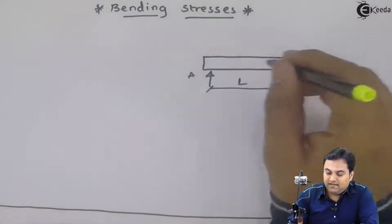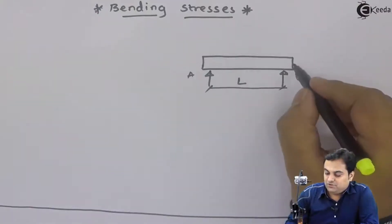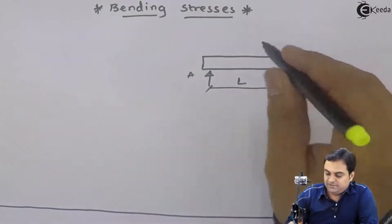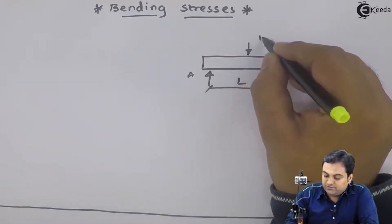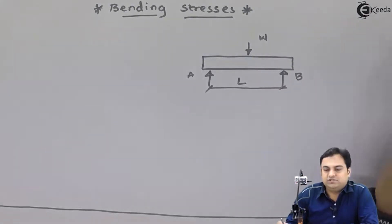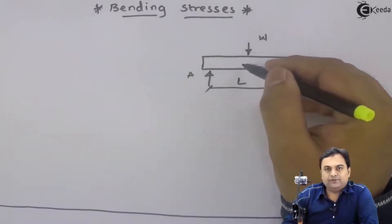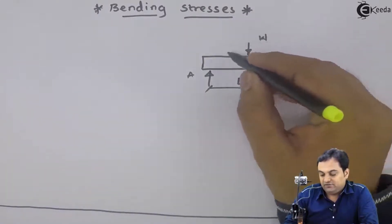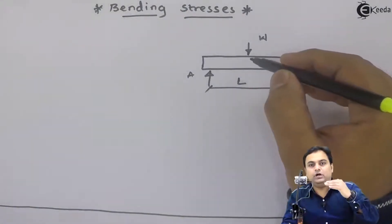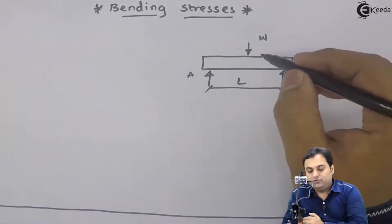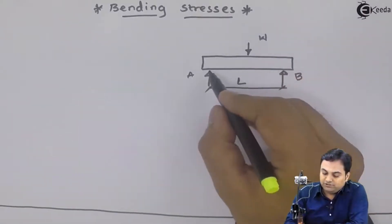Now, if I am keeping a load on this horizontal section and applying this load W, you can see that the horizontal section will go down by some amount — it will move down.